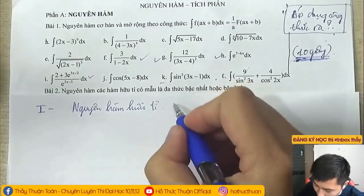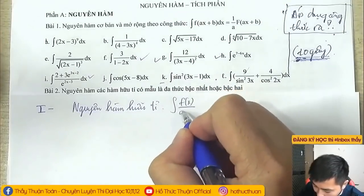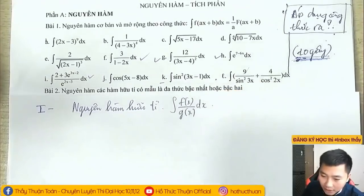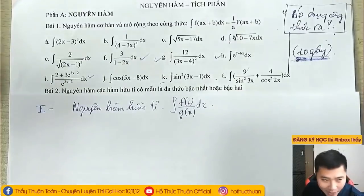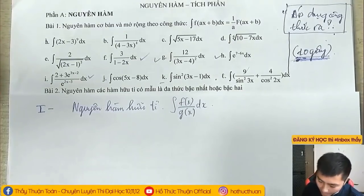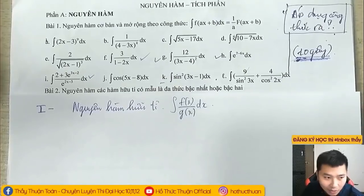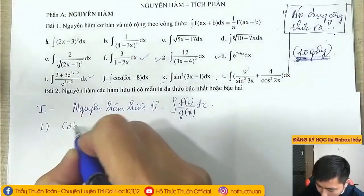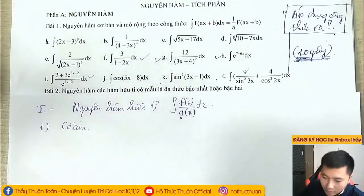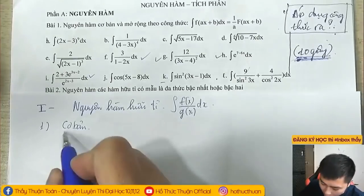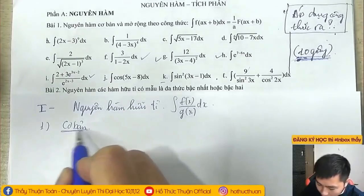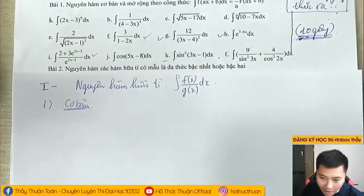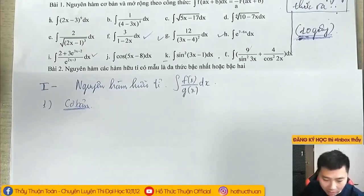Nguyên Hàm Hữu Tỷ tức là giống như dạng một phân số, F(x) trên G(x), dx. Nó có nhiều dạng lắm. Hàm số F(x) và G(x) có rất nhiều dạng. Để các bạn có thể ghi nhớ một cách có trình tự hệ thống, thầy sẽ chia ra làm hai dạng chính: một là dạng cơ bản, thứ hai là dạng thường gặp.